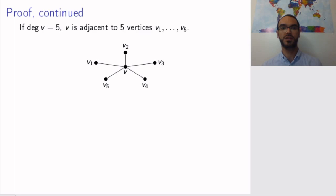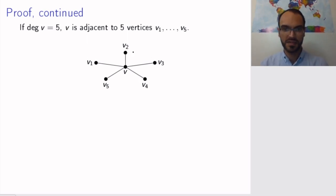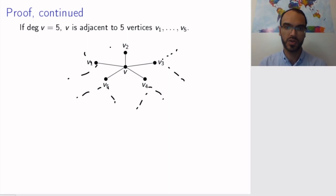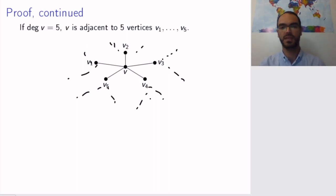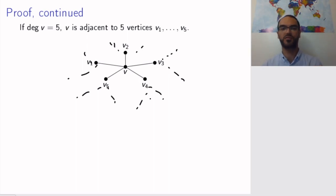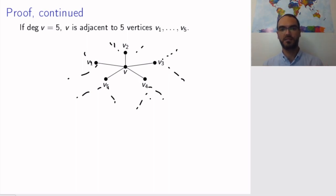But life isn't always that good, because we might have the case where the degree is actually five. We only know that there is a vertex with degree at most five, not less than five. So if the degree is actually five, vertex v is adjacent to five vertices — this is not the whole graph, the graph continues in all directions, but this is a local shot of the graph. Let's name these vertices v1 to v5. The naive approach — however I color v1 to v5 I can find a color for v — is not true, because maybe I need all five colors for v1 to v5 and there is no color left for v.